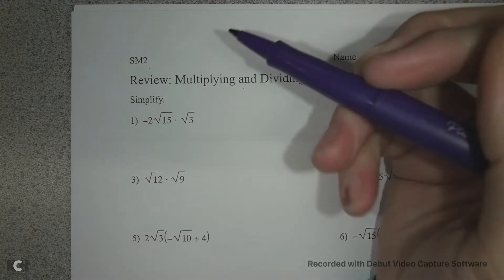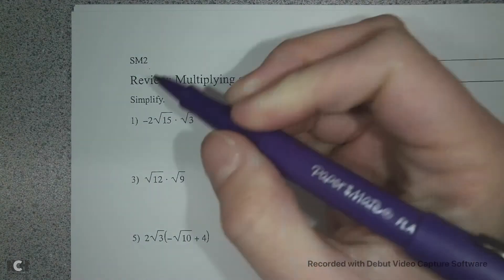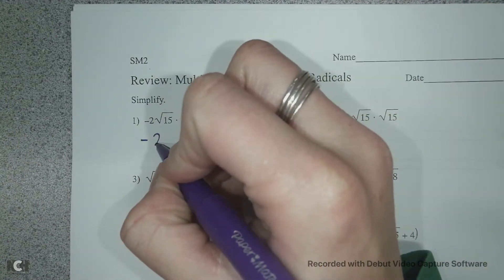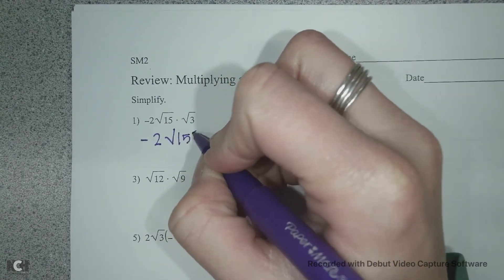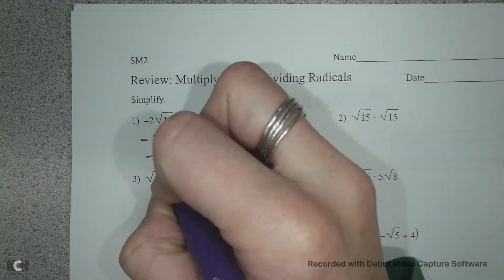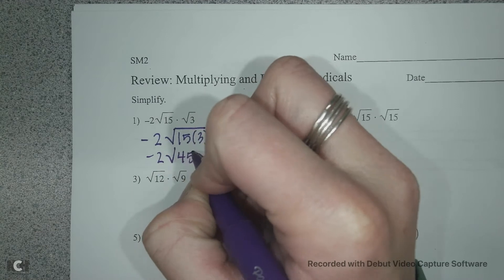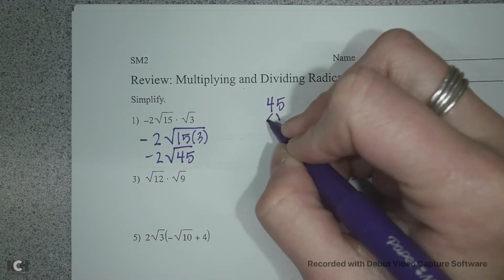For example number one, we are multiplying our radicals. You first have to multiply the leading coefficient, so negative 2 times 1 is negative 2. Then we multiply underneath our radical, so 15 times 3 is 45. Then we want to be able to reduce if we can, so we're going to check 45 divided by 5 is 9.